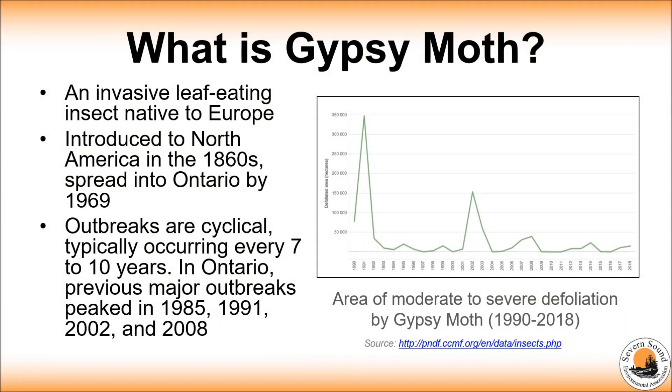Gypsy moth is a non-native invasive insect that was brought to North America in the 1860s from Europe. It was first established in the USA and spread to Ontario by 1969.